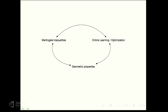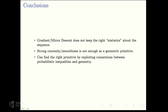There's a very interesting set of connections that can be exploited. I talked about the connection between geometric properties of the space as given by the Burkholder method, and the connection to martingale inequalities. Online learning plays a crucial role because we understand what inequalities to prove by looking at the dual of this problem. In conclusion: gradient descent and mirror descent do not keep the right statistics about the sequence, and the geometric primitive of strong convexity or smoothness is not enough. We can get the right result by exploiting connections between probabilistic inequalities and geometry.